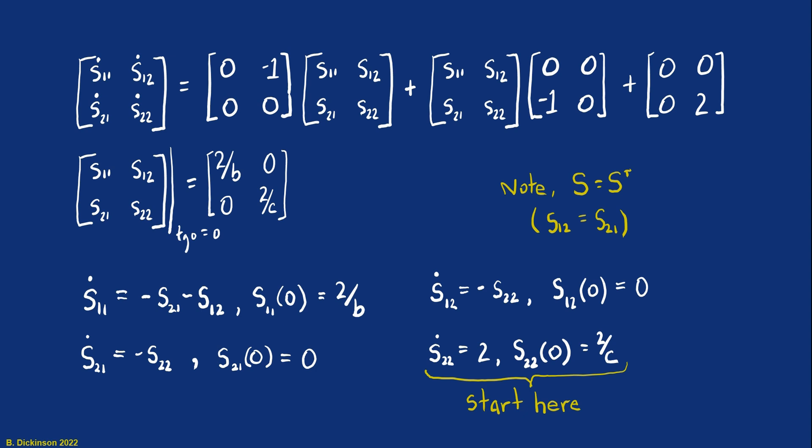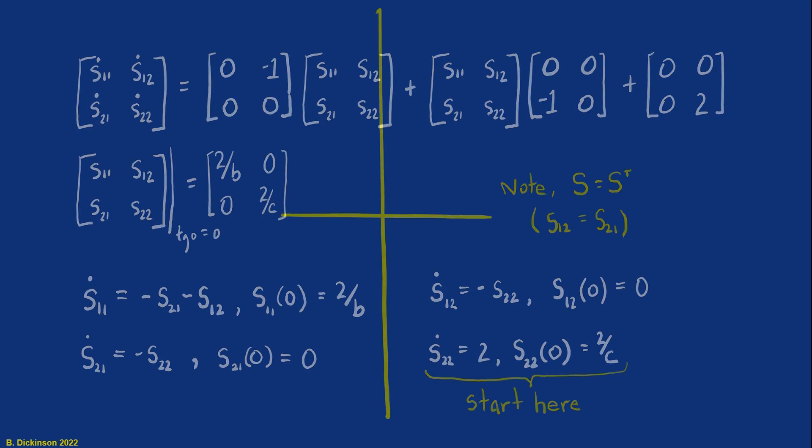Let's solve for S22. So there we go. Directly integrating through. D is the constant of integration. Applying the initial condition. And finally, obtaining S22 as a function of time to go.